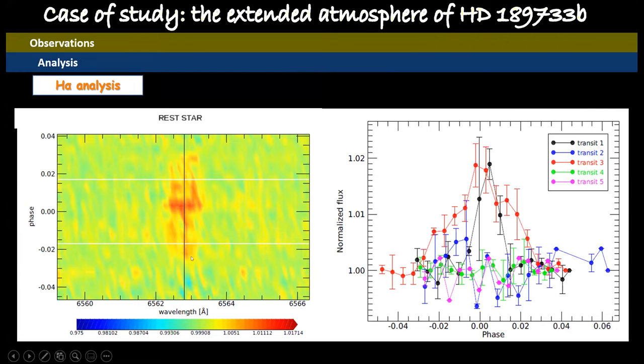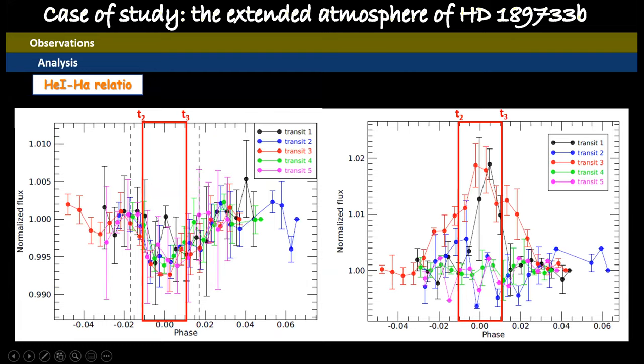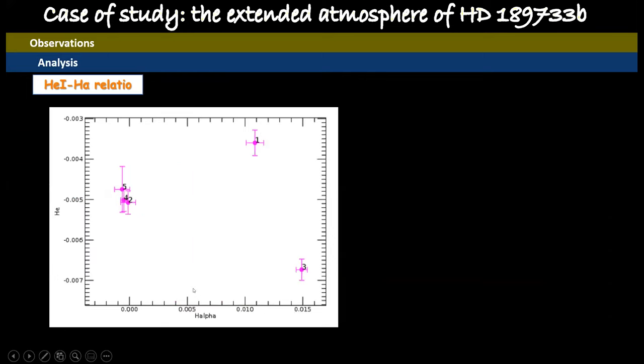Then if we average the light curve between the contact points T2 and T3, both for helium and for the H-alpha, we obtain this graphic where on the x-axis we have the H-alpha absorption, on the y-axis the helium absorption. There are three nights with the same behavior. So probably here we don't have any contamination due to the star.